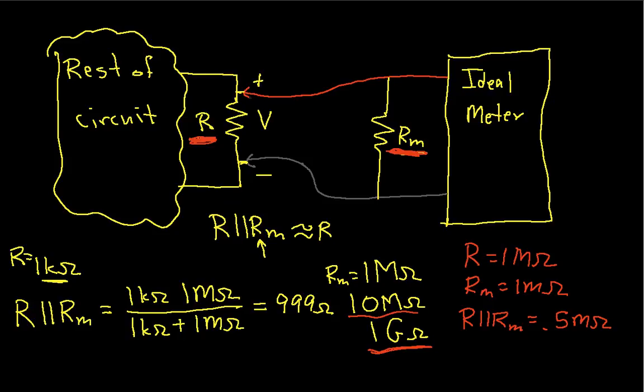If you're trying to measure the current that's flowing through a very small resistor, then the meter shunt resistance is actually going to be a significant fraction of the resistance that you're measuring the current through. And as we saw with voltage, it will also throw off your measurements.